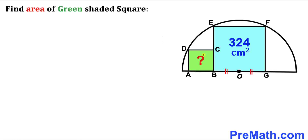Welcome to pre-math. In this video we have a blue square precisely inscribed in the middle of a semicircle, and likewise a green square is inscribed as well. The area of the blue square is 324 centimeter square, and we are going to calculate the area of the green shaded square.